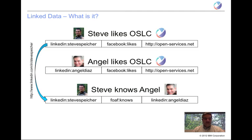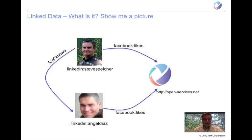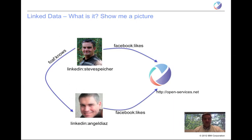So that is the basis of linked data in simple terms. If we take a different look at it as a graph, we can see there are a number of things: a description of me, a description of Angel Diaz, and the website for OSLC. The lines or arcs between these define the relationships. It's a simple graphical picture of a small case focusing on simple facts about two people and one website, one community.